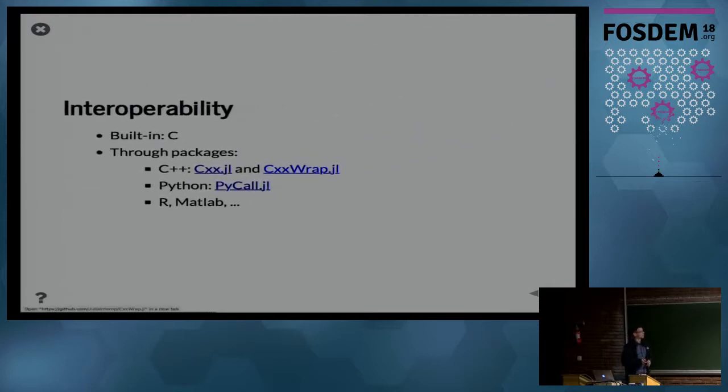The next topic is about interoperability. Natively, Julia is made to be, in terms of memory layout, compatible with C, and it also provides a nice interface for calling C functions directly out of the box. Then there are many packages that help when you need to call C++ or Python or MATLAB. There is a whole series of them.